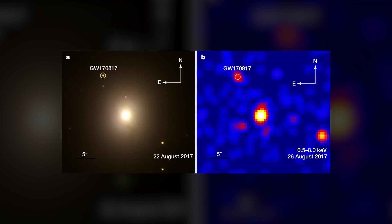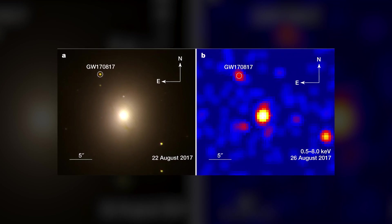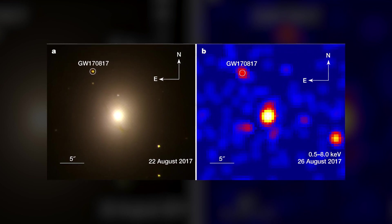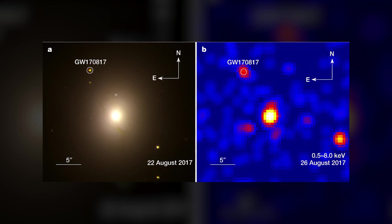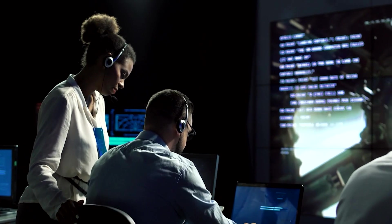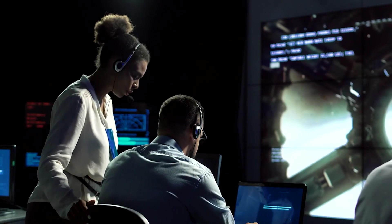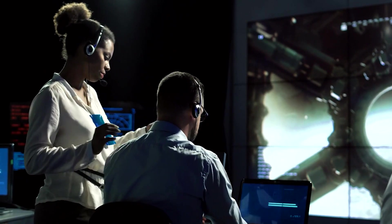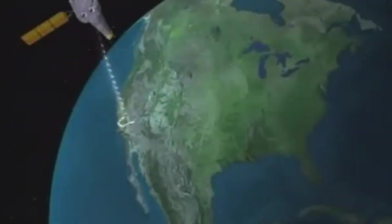GW170817 made history as the first neutron star merger detected by both gravitational waves and electromagnetic radiation, or light. Since then, astronomers have been using telescopes around the world and in space to study the event across the electromagnetic spectrum. One of them being the Hubble, obviously, but that's not the only one who helped factor in some things.